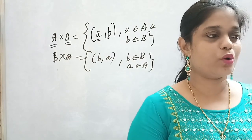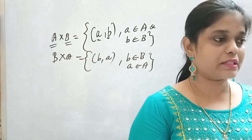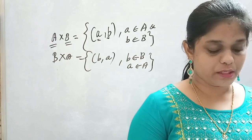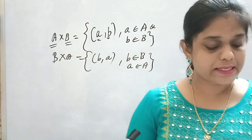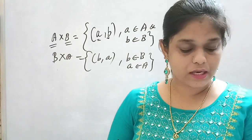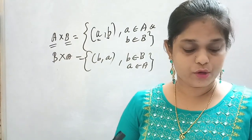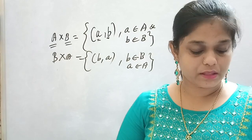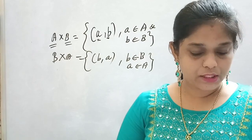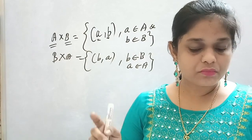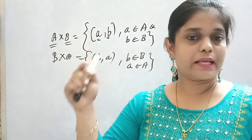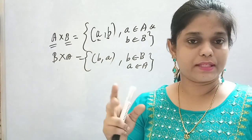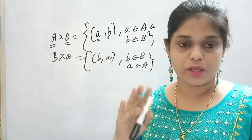That is the difference: B cross A means B is first, A is next. The order is maintained throughout. The third part, B here is the empty set — that is zero. So if one set is a null set, then the product is also an empty set.